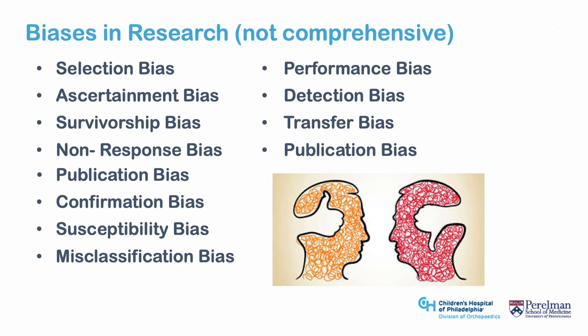There are many biases to be aware of. This small list, which is by no means comprehensive, includes selection bias, ascertainment bias, survivorship bias, non-response bias, publication bias, confirmation bias, susceptibility bias, misclassification bias, performance bias, detection bias, and transfer bias.